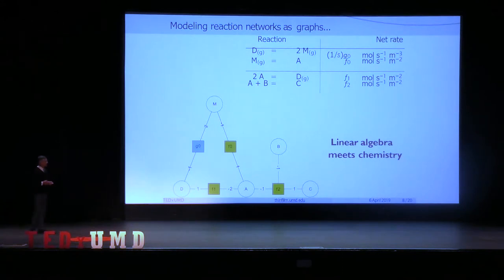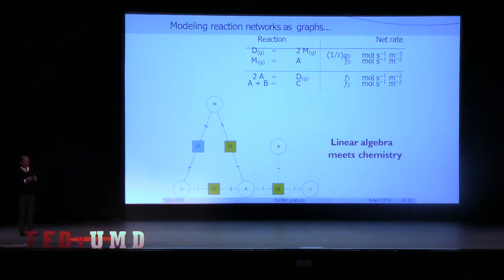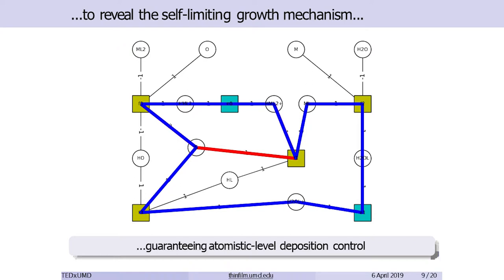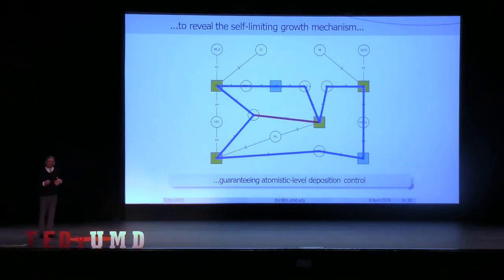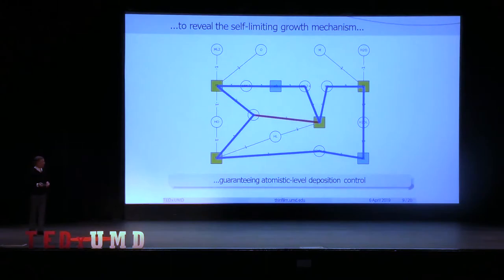I like to call this linear algebra meets chemistry — probably the worst undergraduate technical elective ever, combining most undergraduates' two worst nightmares. Regardless, we do this in our laboratory. We look for the topological features of these reaction networks, such as these intertwined reaction paths, that are indicative of the performance behavior we're looking for. And if we spot them, we have a guarantee of our atomistic-level deposition control.